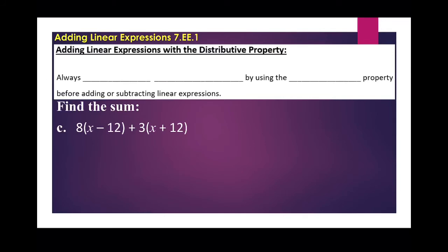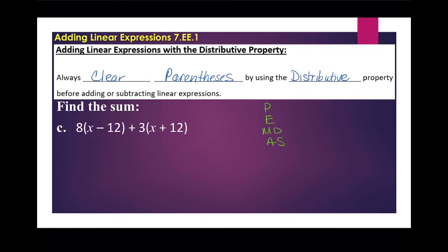The previous examples didn't have much to them — just combining like terms and simplifying. Now with this one, we're going to use the distributive property. One phrase I like to use is 'clear parentheses,' because clearing parentheses gets rid of the parentheses using the distributive property. If you think about order of operations — Please Excuse My Dear Aunt Sally — addition and subtraction are two of the last things you do. If you have a factor in front of parentheses, that's multiplication, which comes before addition and subtraction, so you have to do that first. We can't combine like terms until we've multiplied things out by clearing parentheses.